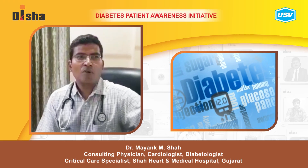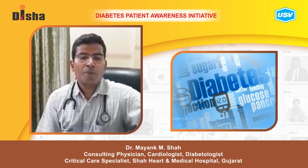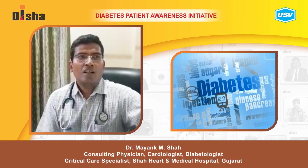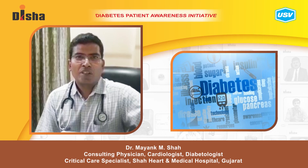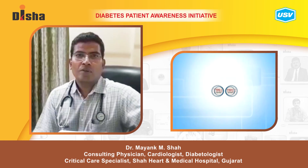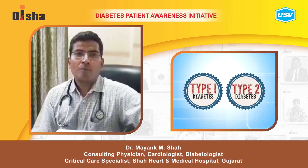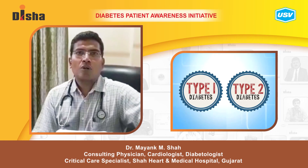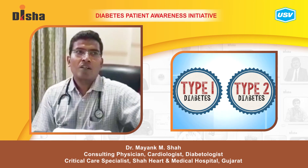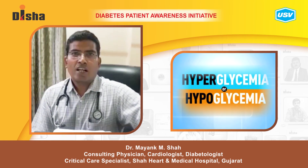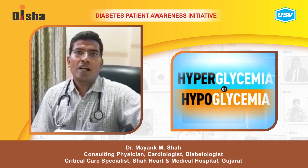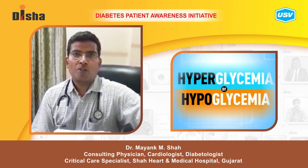Today we talk something about the treatment of diabetes. The goal in diabetes — in type 1 or type 2 — is to control the sugar and to keep it at an optimum level, so that there are minimum hypoglycemia and hyperglycemia episodes.